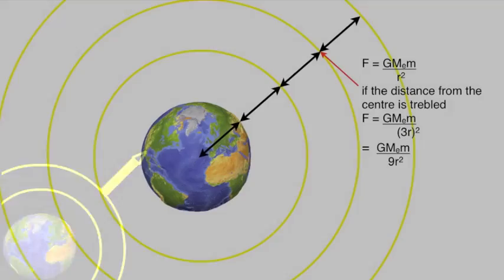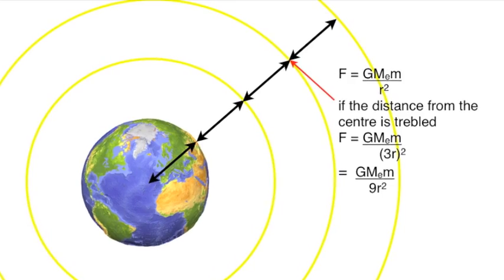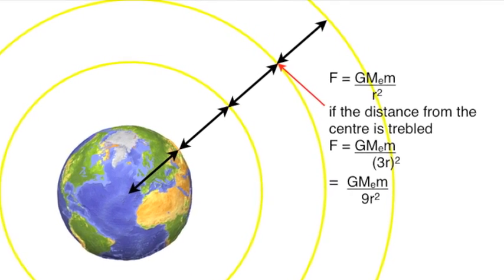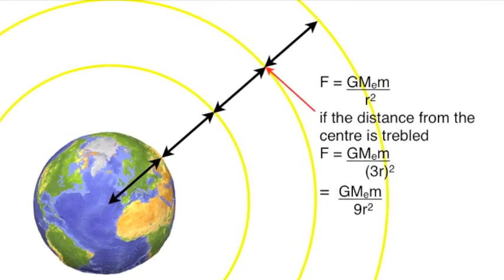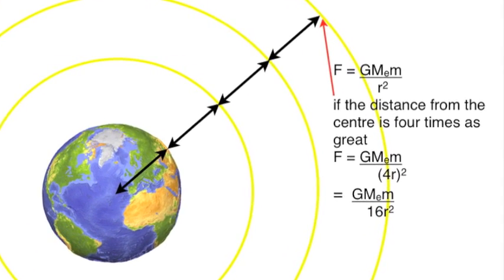At twice the height above the Earth's surface, which is three times the radius from the centre, the force is proportional to 3r all squared, and the force is now a ninth of its initial value. Taking this just one step further, at four times the height from the centre, the force is then 1/16th of its initial value.